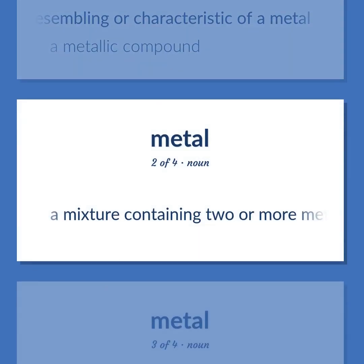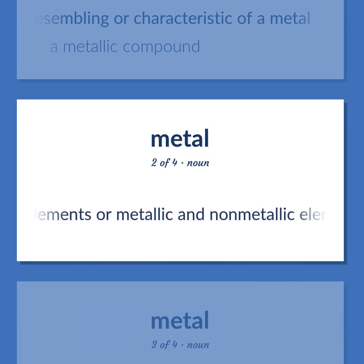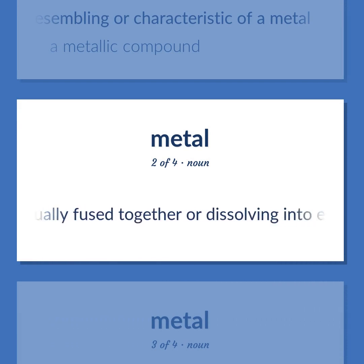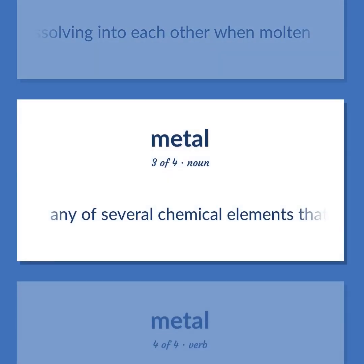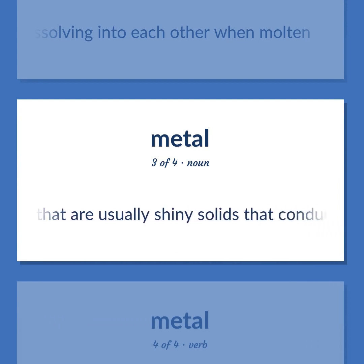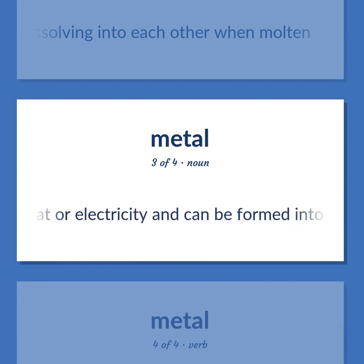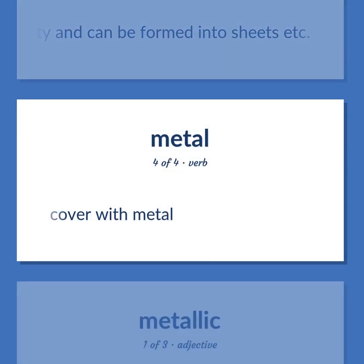A mixture containing two or more metallic elements or metallic and non-metallic elements, usually fused together or dissolving into each other when molten. Any of several chemical elements that are usually shiny solids that conduct heat or electricity and can be formed into sheets, etc. Cover with metal.